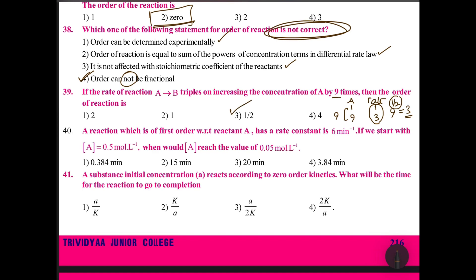A reaction which is first order with respect to A has a rate constant of 6 per minute. If we start with A = 0.5, when would A reach value of 0.05? k equals 2.303 by t, so t equals 2.303 by k. k is 6, log of initial concentration 0.5, final concentration 0.05. If you are going to remove, this will become log 10. Log 10 is 1. 1 means 2.303 by 6, that is equals to 0.384, option 1.